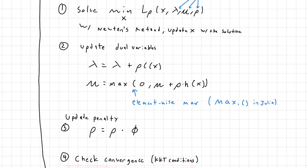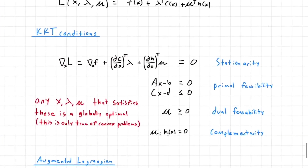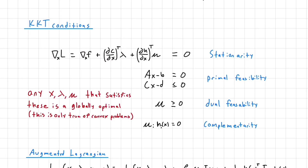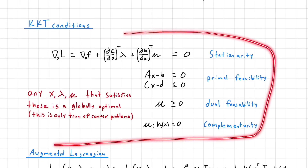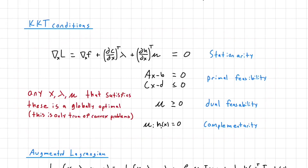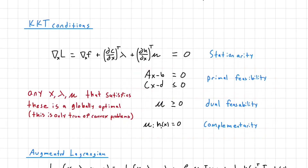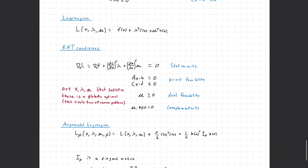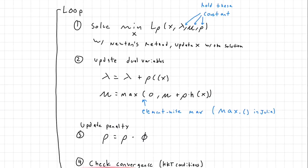We also update the penalty rho as given. Step four is checking convergence. If we find an x, lambda, mu that satisfies all the KKT conditions and the problem is convex, then the solution is globally optimal. In the homework, we check the dual residual and primal residual as our way of verifying some of the KKT conditions. If we've converged we're done; if not, we keep looping until we do.